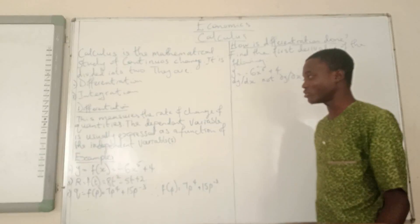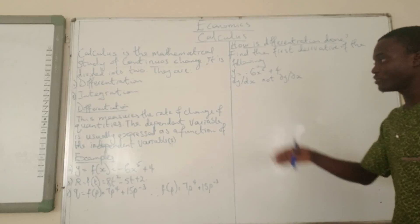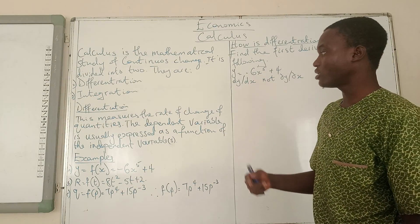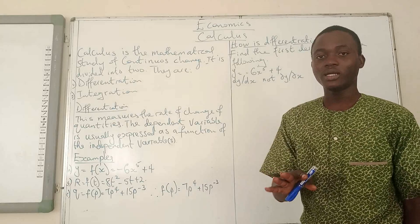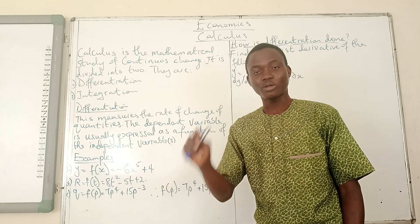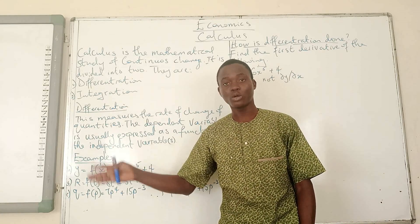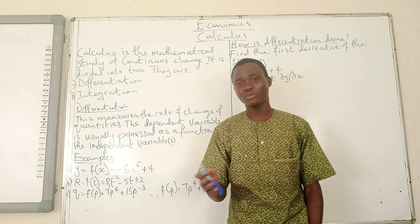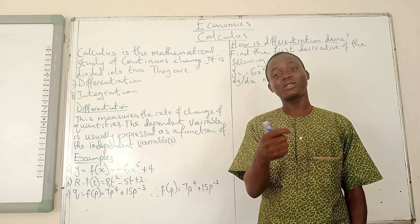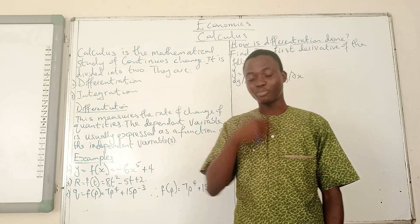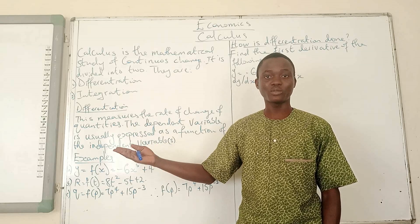They are not big deals, don't worry. What is differentiation? Differentiation measures the rate of change of quantities. There are basically two sets of variables: one which is a dependent variable, and then one or more independent variables. The dependent variable is called dependent because its behavior depends on the behavior of the other variables that we call the independent variables.